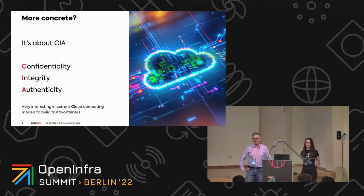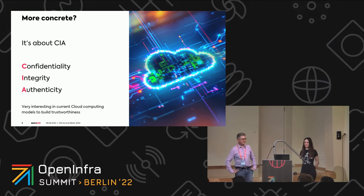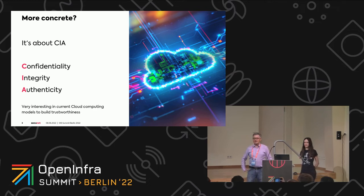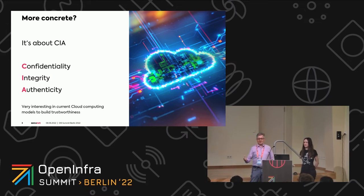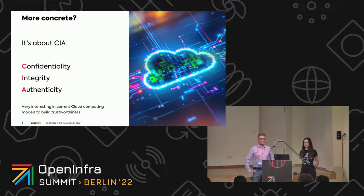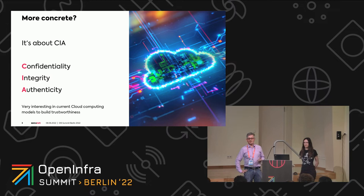CIA is a common abbreviation in the security area for security goals we want to reach with mechanisms that we implement. It's confidentiality, integrity, and authenticity. This is especially interesting in the context of cloud computing, when you have these models of providers and different stakeholders on the software stack. It provides mechanisms and means to secure data, provide integrity of data, and authenticity of data.